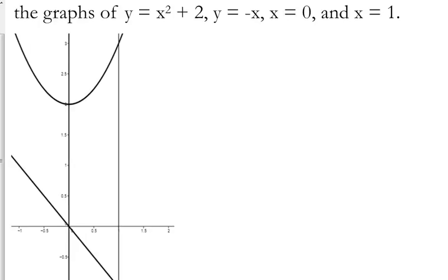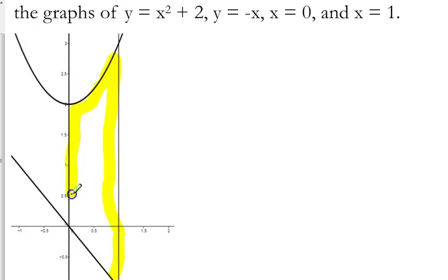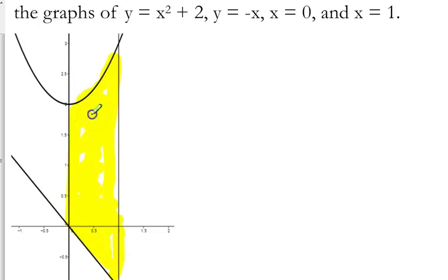Most of the time you're going to have to figure out what it looks like, or you're going to have to know that one function is on top of the other function. For right now, I wanted to go ahead and give you the picture. So we are finding this area right here between 0 and 1 for the x's, and x squared plus 2 is the top function, negative x is the bottom function.